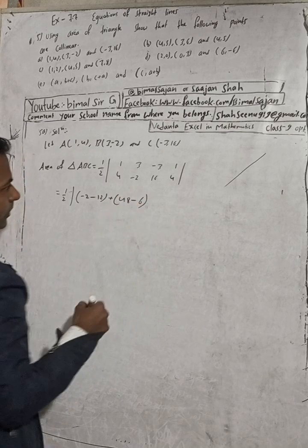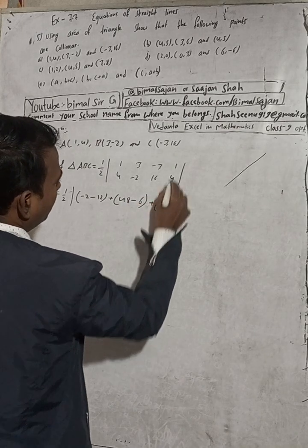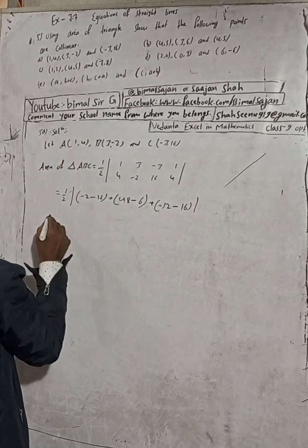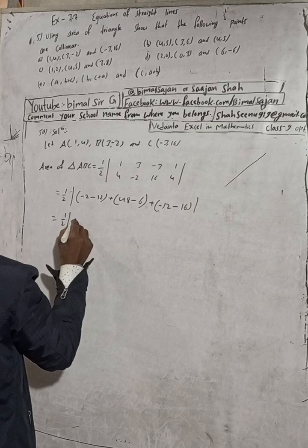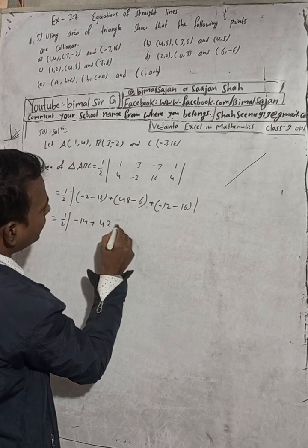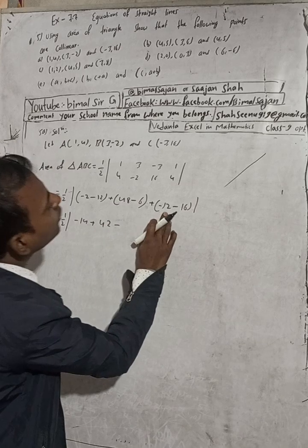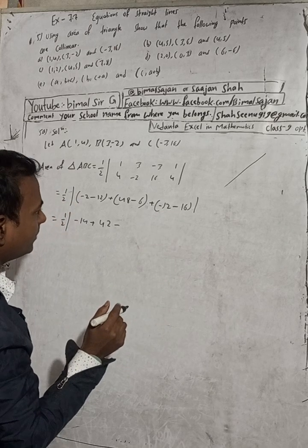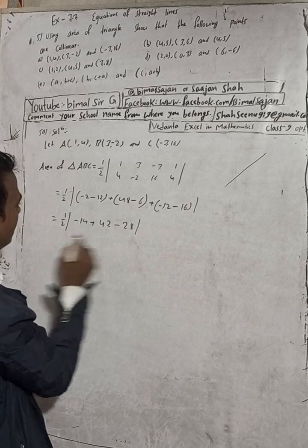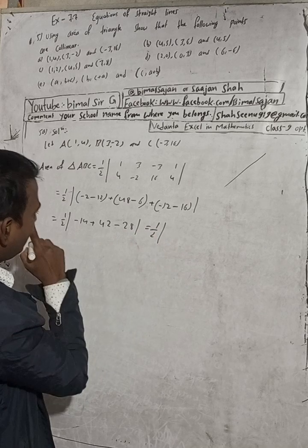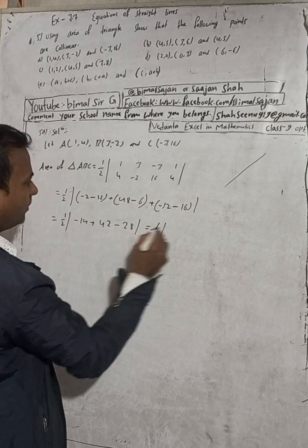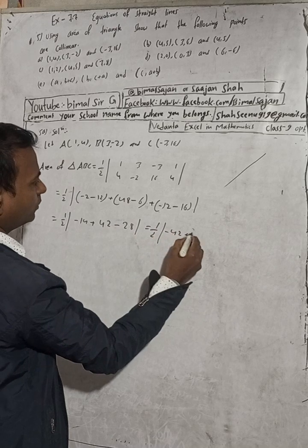Continuing the calculation: plus 4(3 minus 2) minus (minus 2 minus 1) minus 16. This equals 1/2 times |(-2 - 2) minus (-14)| plus 48 minus 6 which is 42, then minus 12 minus 16, giving 18 minus 26, then minus 21 minus 28 plus 30. We have minus 14 and minus 28 which add to give minus 42, and then plus 42.